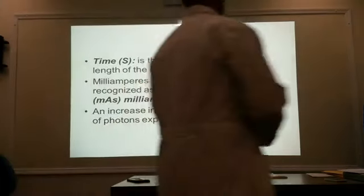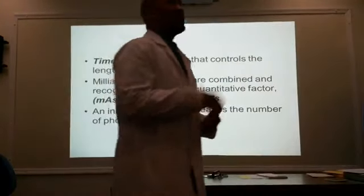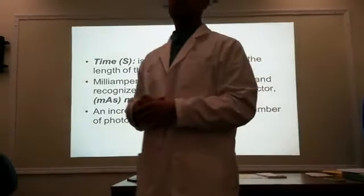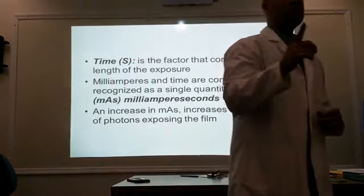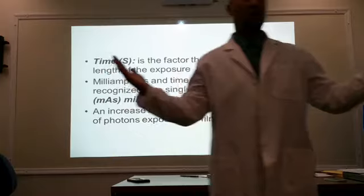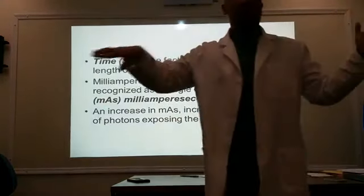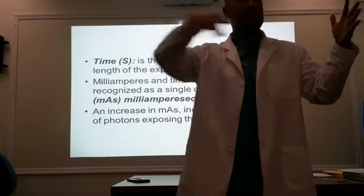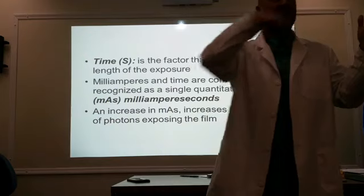Let's talk about time. Not only can we control the amount of electrons being boiled off at the filament through thermionic emission, we can also control our exposure time — the time we are allowing the electrons to travel from cathode to anode. The longer our time, the longer we are giving the electrons to travel. Therefore, if it's a longer time, more electrons can travel. That's also controlling quantity.